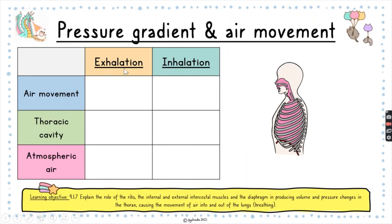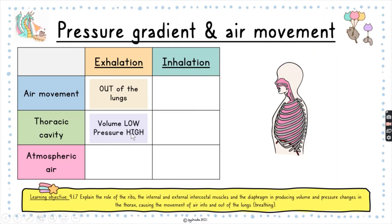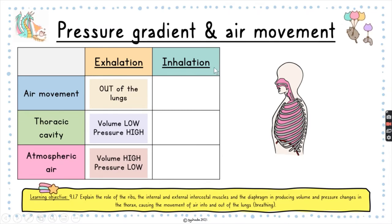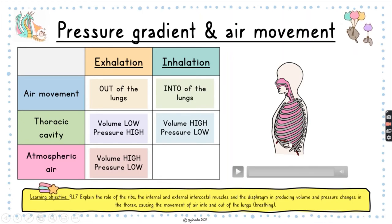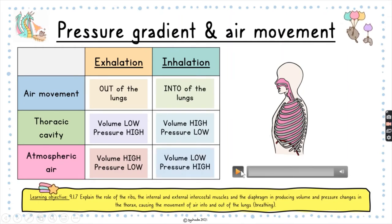During exhalation, air moves out of our lungs, so the thoracic cavity has a low volume. Having a low volume means pressure will be high — this relates to Boyle's Law, which you may have covered in physics. During inhalation, you want air to move into the lungs, so the thoracic cavity must have a high volume so that pressure is low. Air moves from high pressure to low pressure.